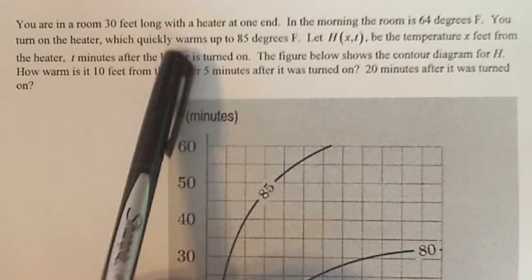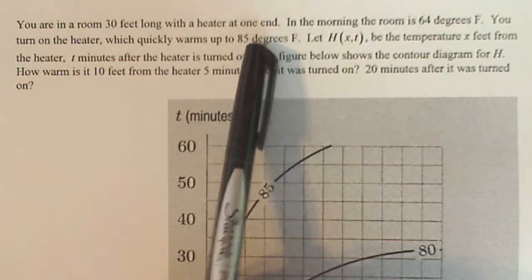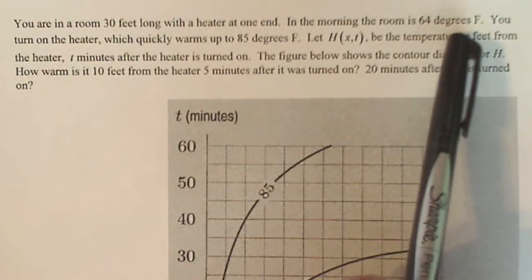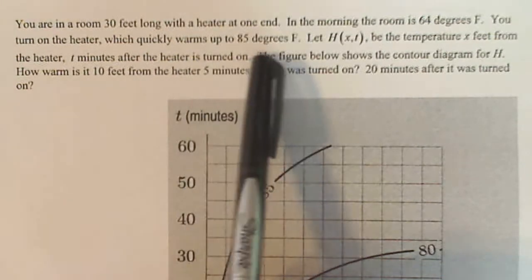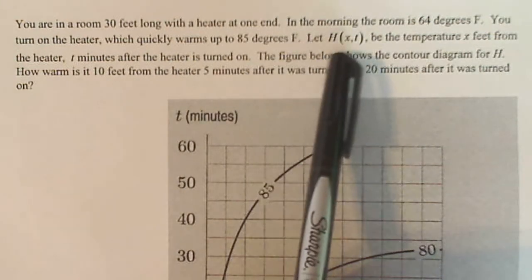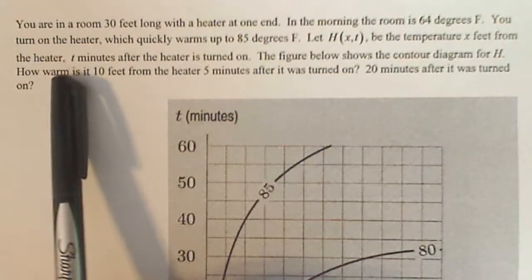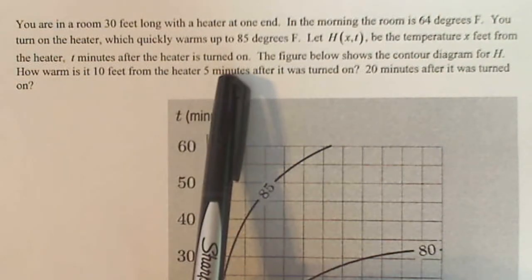You're in a room 30 feet long with a heater at one end. In the morning, the room is 64 degrees Fahrenheit. You turn on the heater, which quickly warms up to 85 degrees Fahrenheit. Let H of x,t be the temperature x feet from the heater t minutes after the heater is turned on.